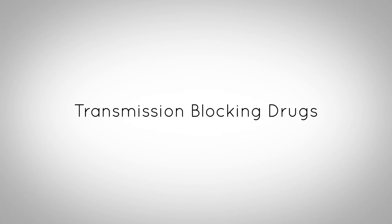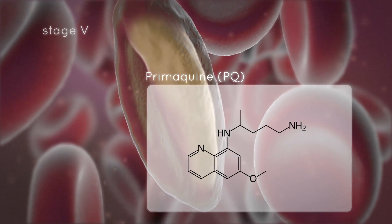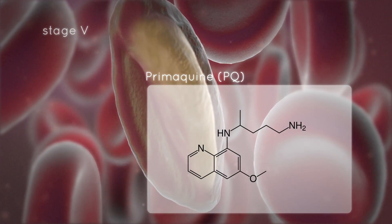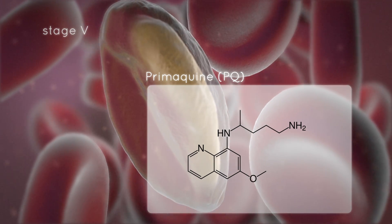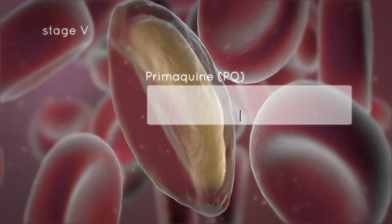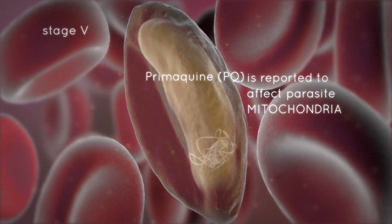Transmission blocking drugs. Primoquin is the only drug currently available that is effective against stage 5 gametocytes. The exact mechanism is not well understood, but is reported to affect parasite mitochondria.